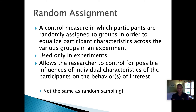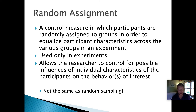Now this is not the same thing as random sampling, which we talked about earlier. Random sampling is a technique to get a representative sample — everybody has an equal chance of being chosen. The two things are related but not the same, because you can use random sampling in other research techniques, whereas random assignment is done only in an experiment, where you're taking individual samples and putting them into each group. There's an important distinction there.